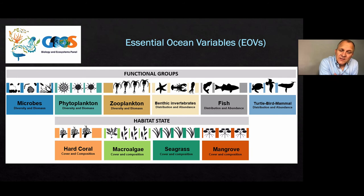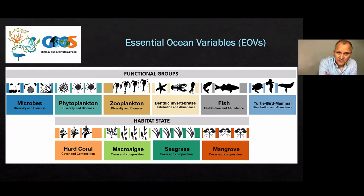One of the activities that GOOS, the Global Ocean Observing System, is doing is defining and selecting the essential ocean variables. This group has selected a number of functional groups and habitat EOVs, and this is what OBIS is supporting.